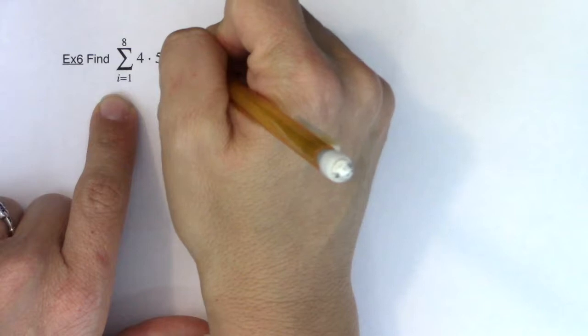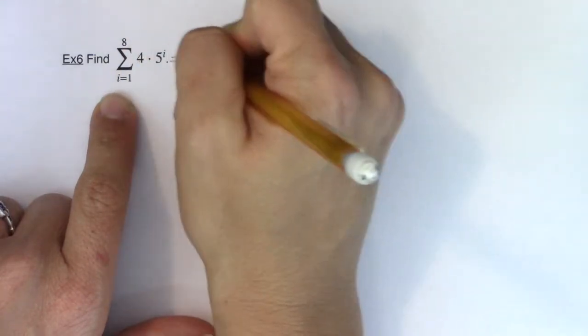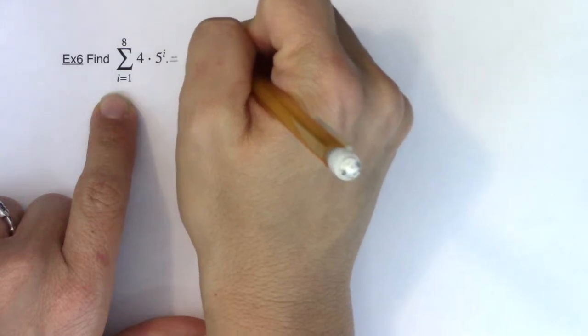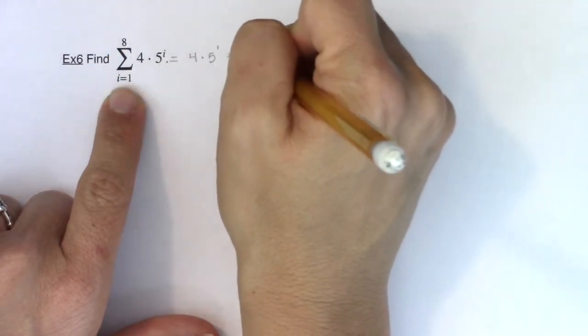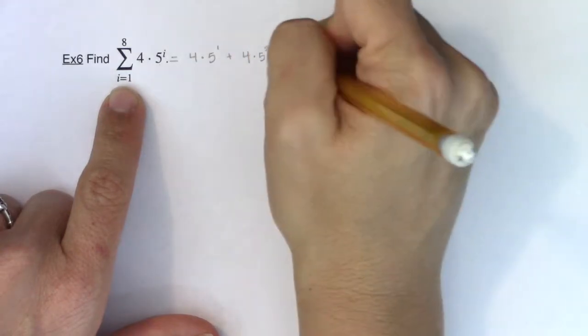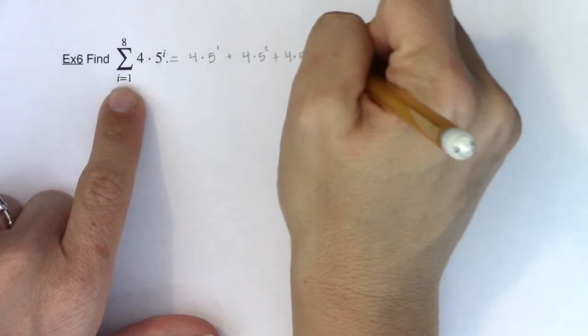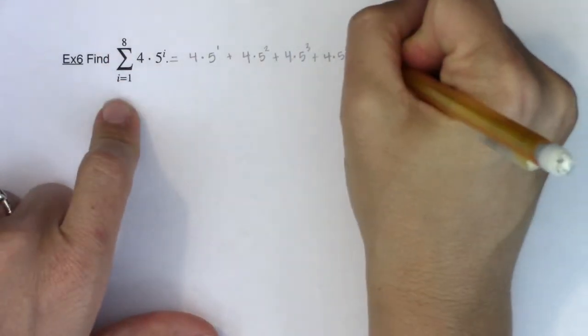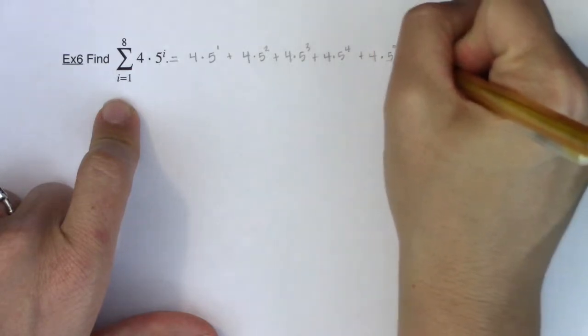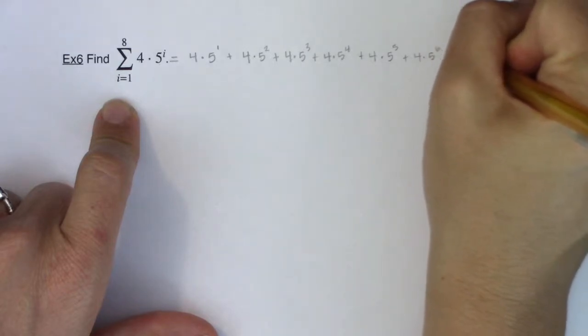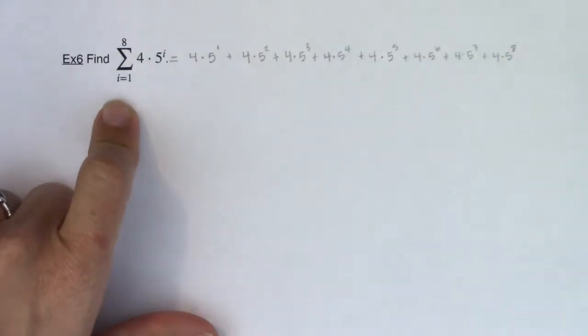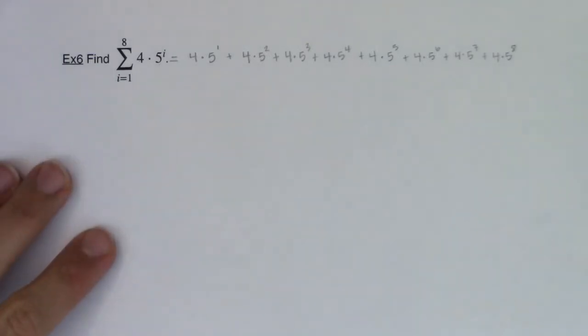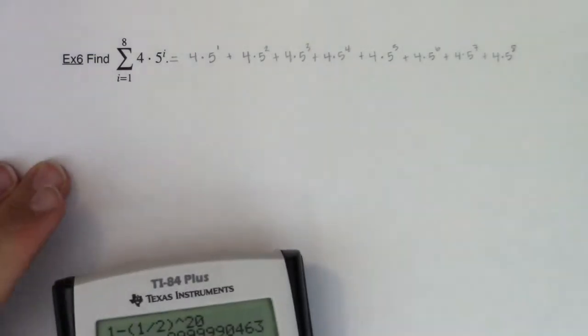So if I start with i equaling 1, I'm not going to crunch any numbers. I'm going to leave them as is so you can see the pattern. If i was 1, this would be 4 times 5 to the first power. I would add to it this second term in my sequence, which is when i is equal to 2. This would be 4 times 5 squared. And then I would add to it the third term in my sequence, the fourth term in my sequence, and I've got to go all the way up to the eighth term. So let me write this out.